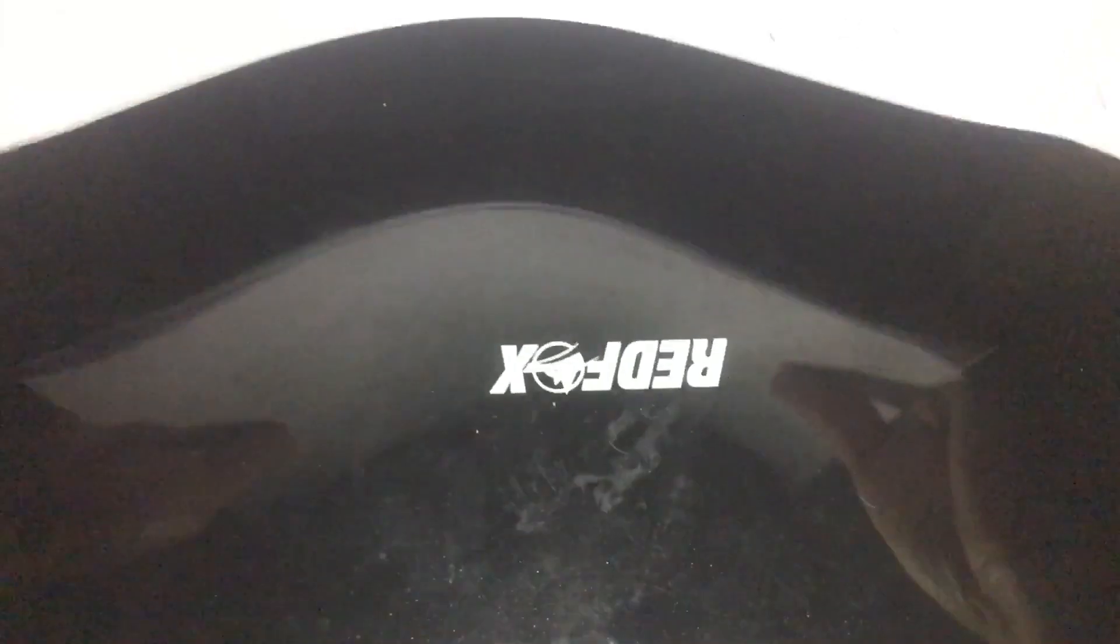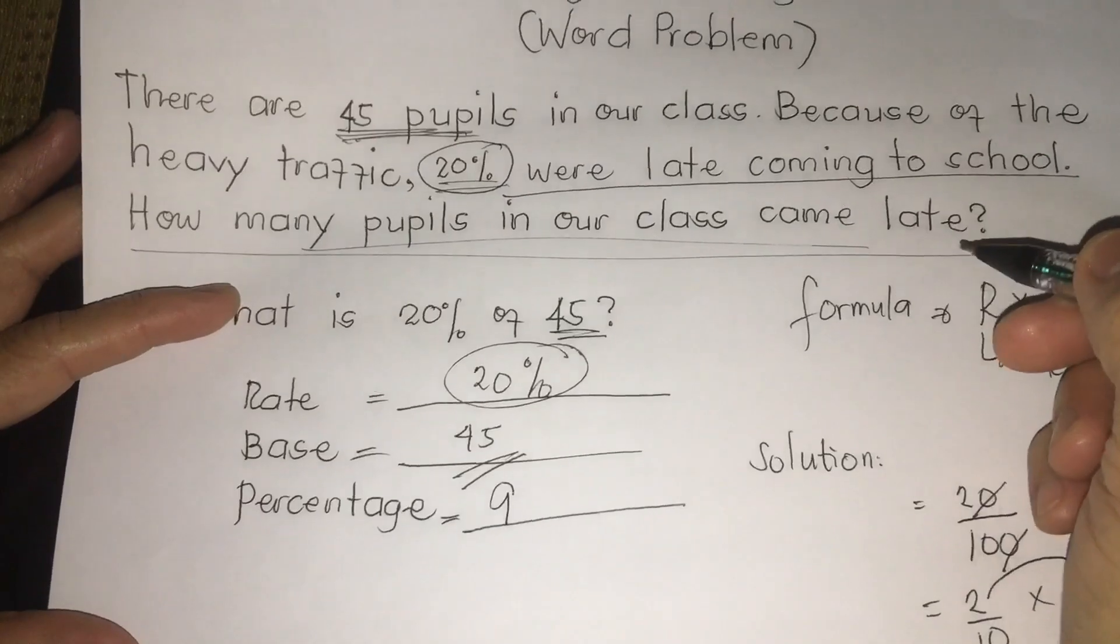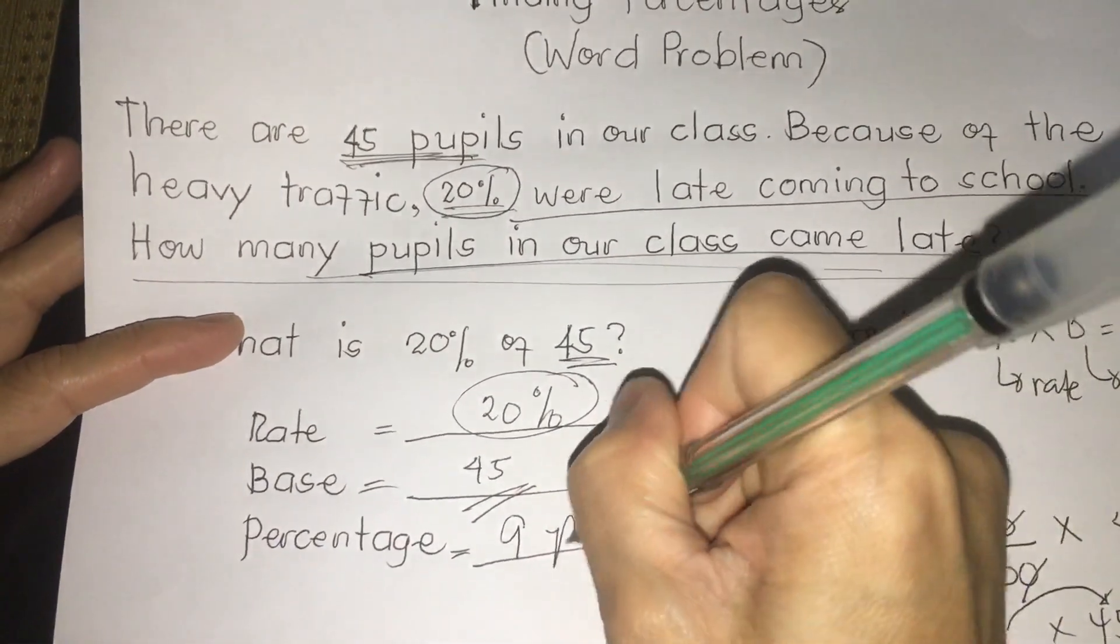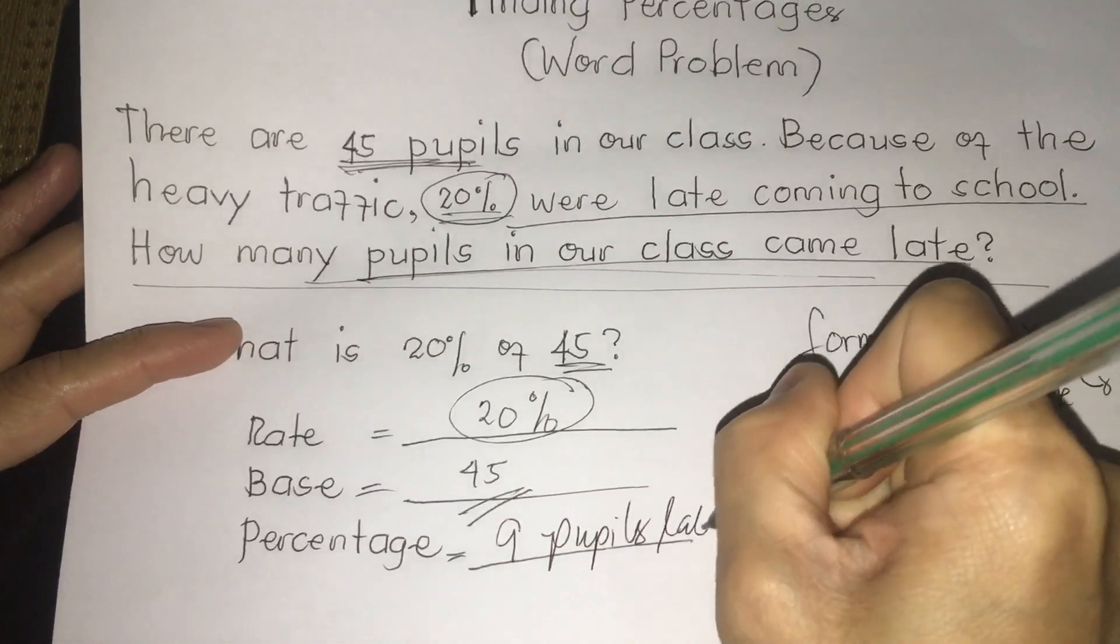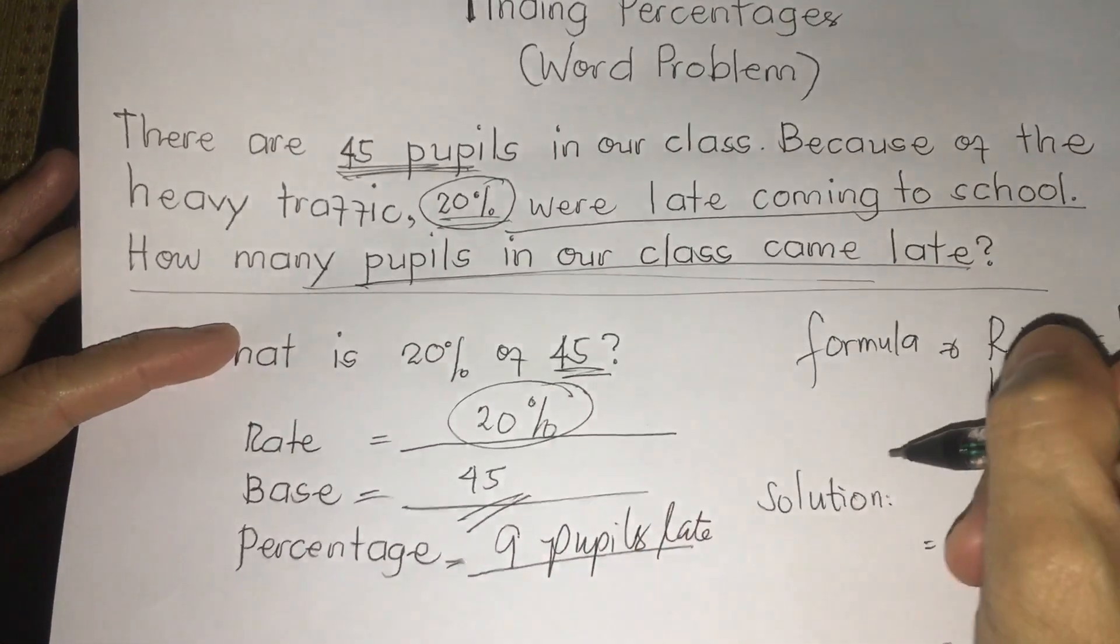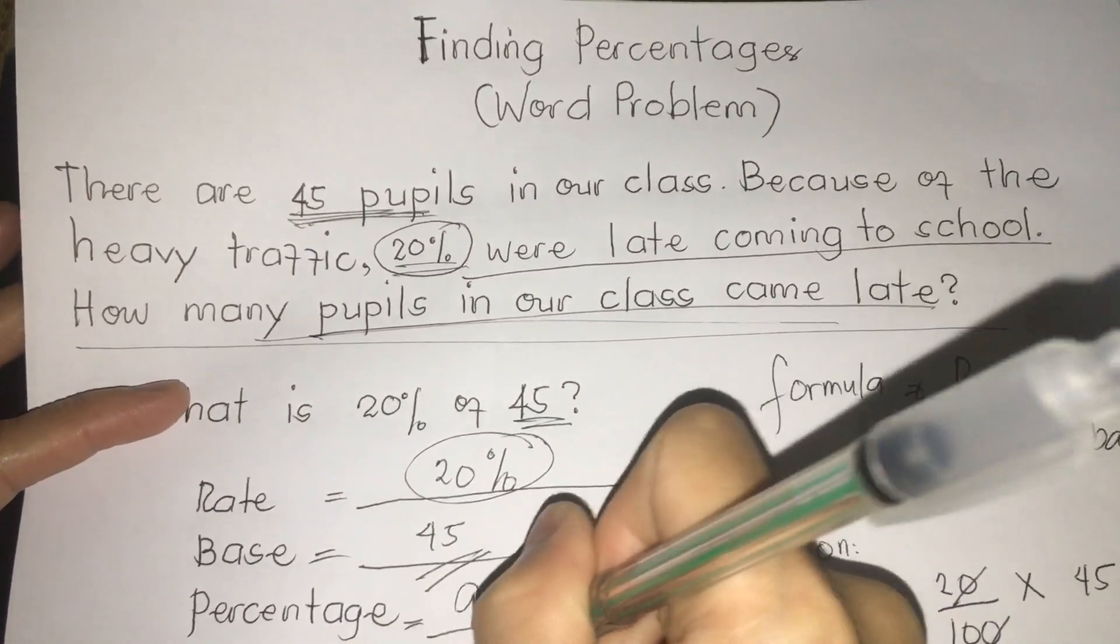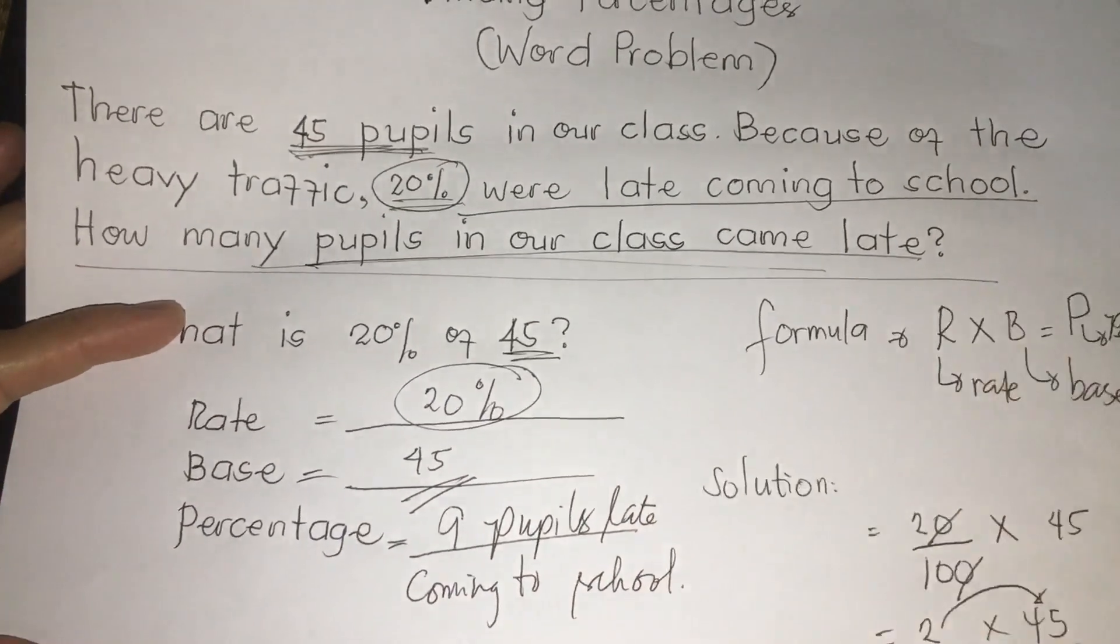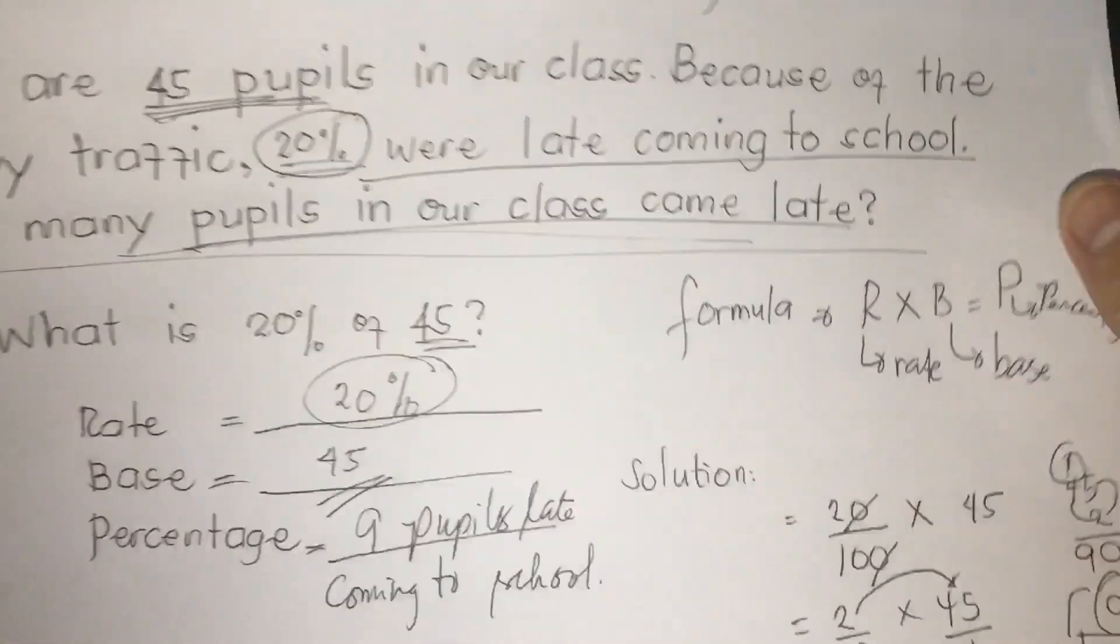So we're going to put here 9 pupils late coming to school. That is how to solve percentage for the first word problem.